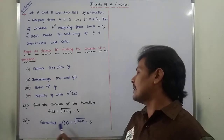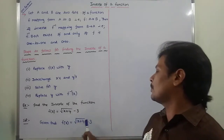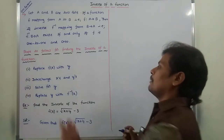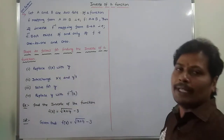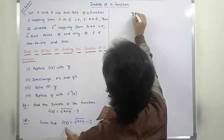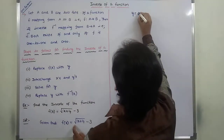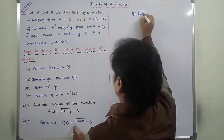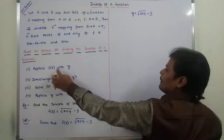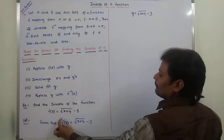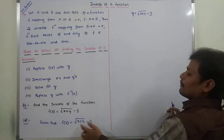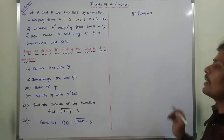Given that F of X is equal to the square root of (X plus 4) minus 3. First step: replace F of X with Y. So F of X is replaced with Y, giving us Y is equal to the square root of (X plus 4) minus 3.